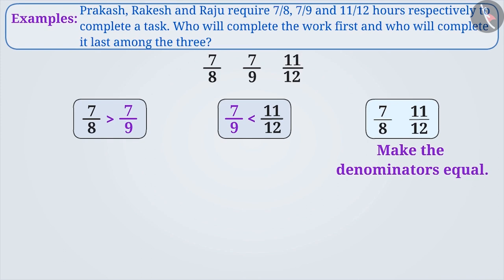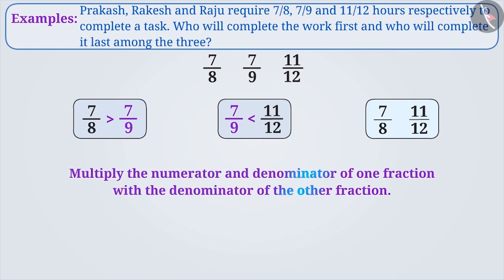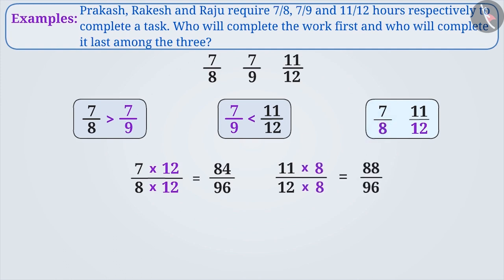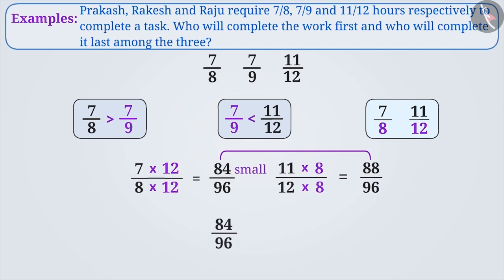Now let's compare 7 by 8 and 11 by 12. The denominators of both these fractions are not equal, so first we make the denominators equal. It is not always necessary to use LCM to make the denominators equal — let's learn another interesting method. Here, the numerator 7 and the denominator 8 of the fraction 7 by 8 are multiplied by 12 to get 84 by 96. Similarly, the numerator and denominator of 11 by 12 are multiplied by 8 to get 88 by 96. Here the numerator 84 is smaller than the numerator 88. Therefore, the fraction 84 by 96 is smaller than 88 by 96, which means 7 by 8 is smaller than 11 by 12. Therefore, the largest fraction is 11 by 12.